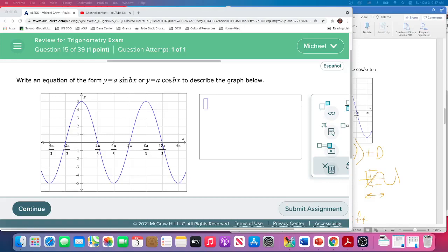For question 15 we are asked to find the function that fits this graph. The first decision we have to make is do we do y equals a sine of bx or y equals a cosine of bx.